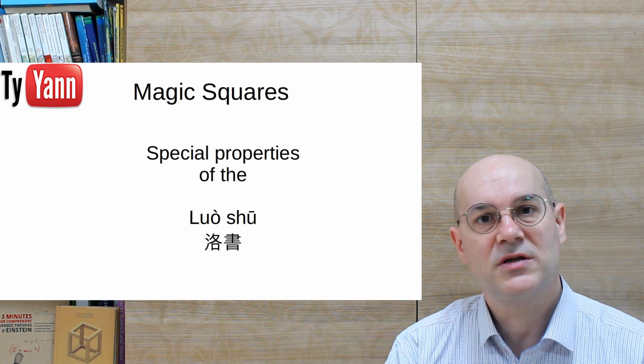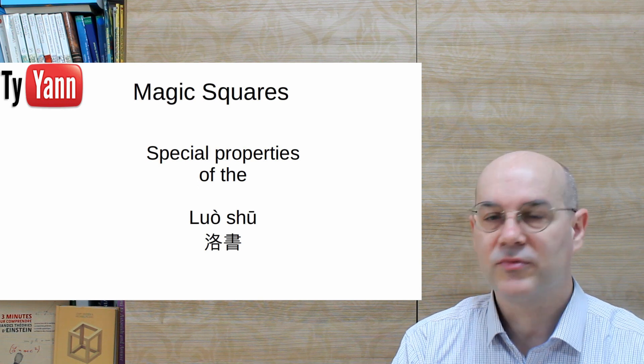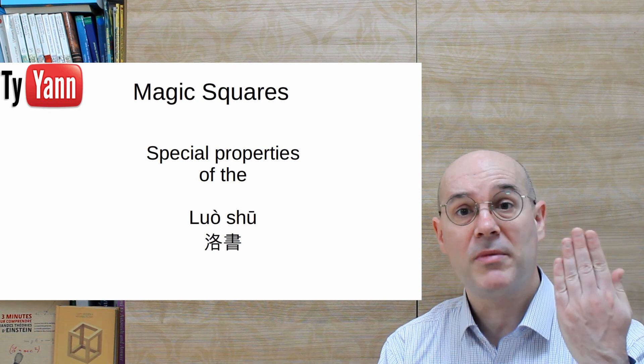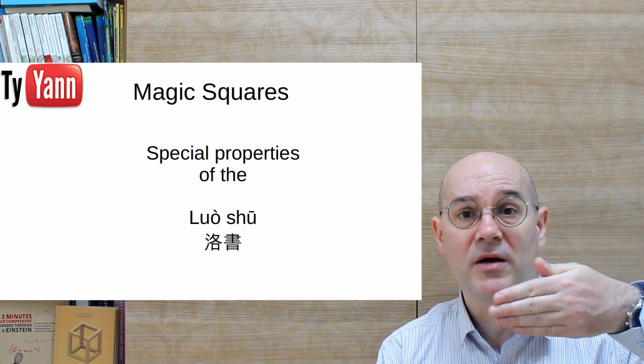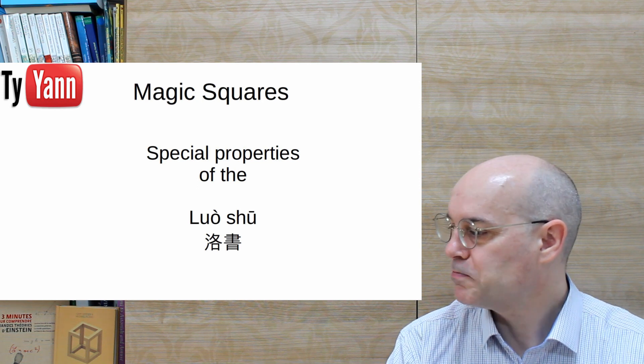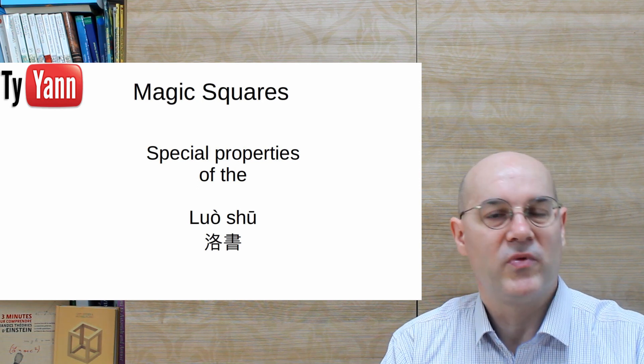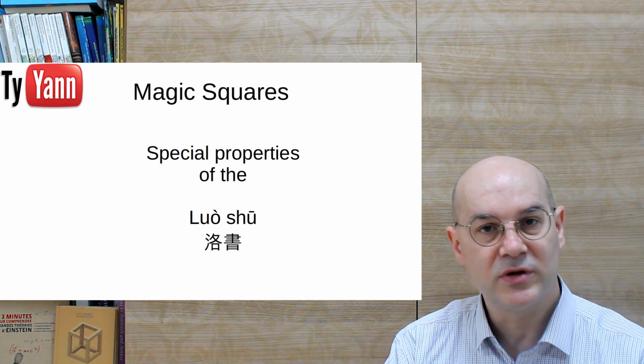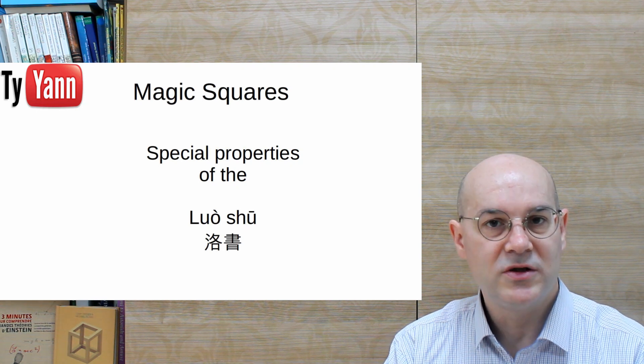Of course, you might not have ended up when you build it up with the same square exactly as mine, but actually it may be just a mirror image of mine or maybe a rotation of mine, but it's still the same. So that's it. That's one of its properties. It's unique. The 3x3 with numbers 1 to 9 magic square is unique.